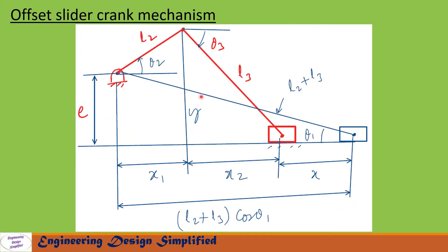When the crank and coupler come in line, as shown by this blue line, the slider will be at its rightmost position. At this position the length represented by this blue line is l2 plus l3. The angle between this line and the horizontal is theta1. The distance between the crank center and the extreme position of the slider will be (l2 + l3) cos(theta1).